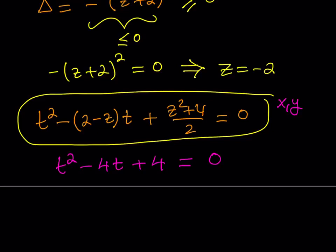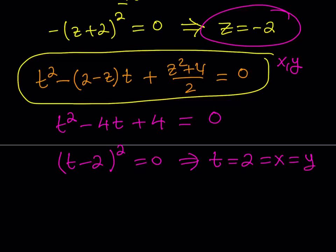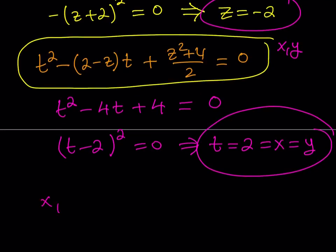Therefore the roots give us x and y. This factors as (t minus 2) squared equals zero, which implies t equals 2, meaning x equals y equals 2. This equation has only one solution, so x and y are both equal to 2. My solution set is (x, y, z) equals (2, 2, negative 2). This concludes the first method — I hope you like it because I really like it!